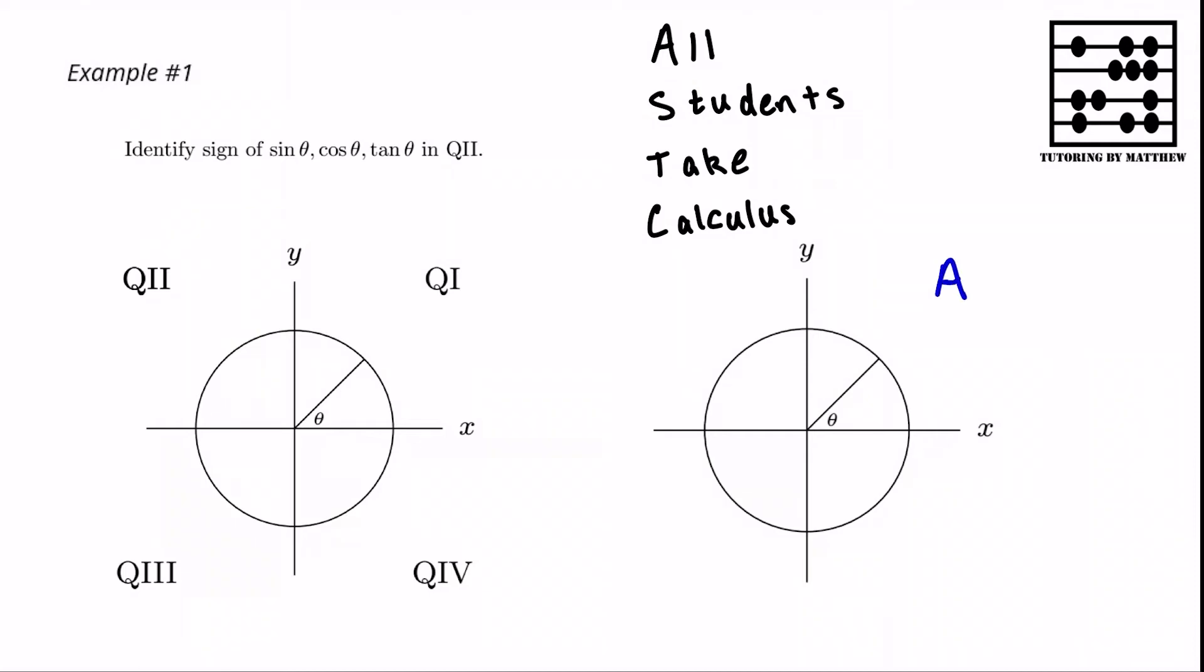Where A means all three are positive, S means only the sine is positive, T means only the tangent is positive, and C means cosine is positive. All students take calculus.